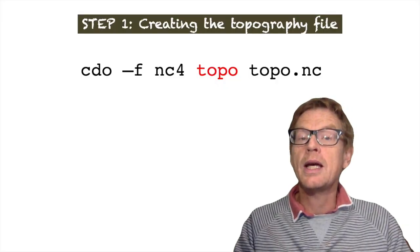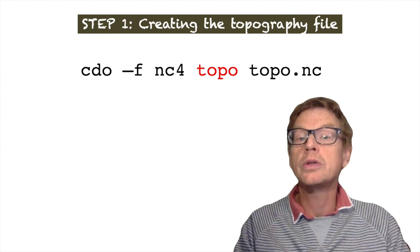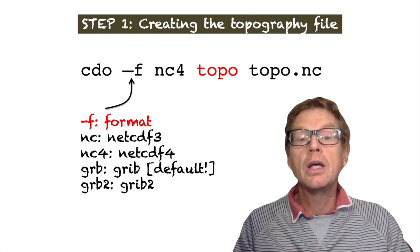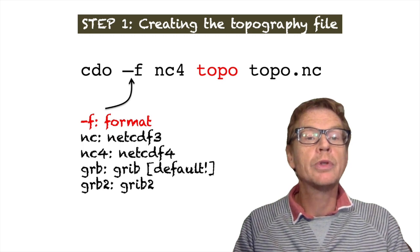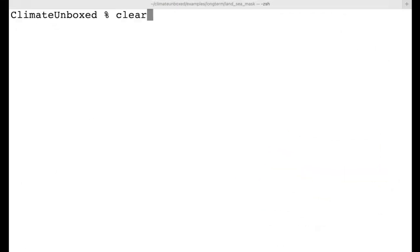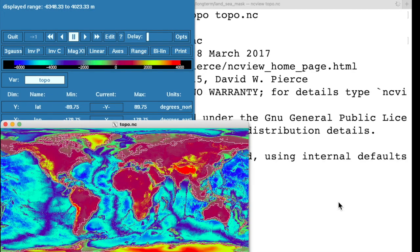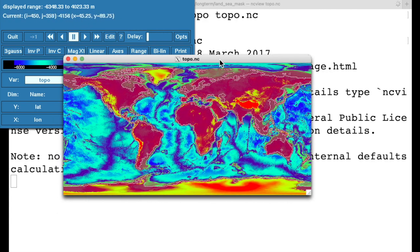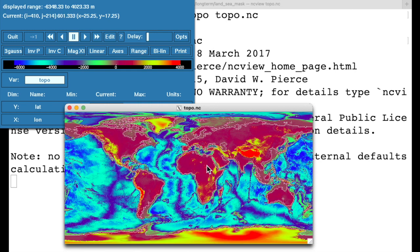So what we need then is actually the command line option minus f nc4 to ensure that the output is in netCDF format. We can also have the standard netCDF3 or we can also specify GRIB or GRIB2 formats as well. So now what we want to do is try again. But this time we're going to specify minus f for the file format, nc4. The command is topo. And then we have topo.nc. And this time when we open the file, we have a global file of the topographical height.